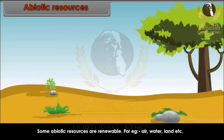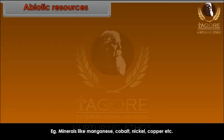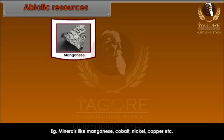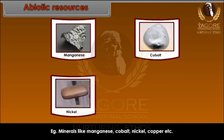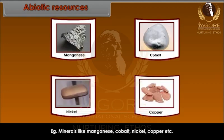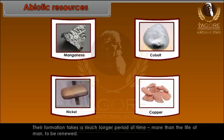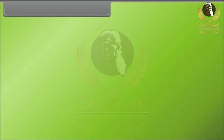There are some abiotic resources which are non-renewable. For example, minerals like manganese, cobalt, nickel, copper, etc. Their formation takes a much longer period of time — more than the life of man — to be renewed.